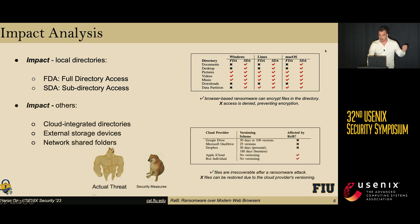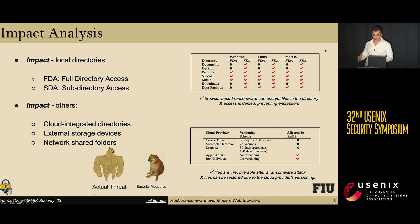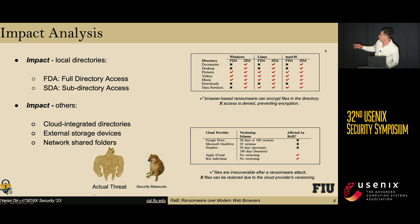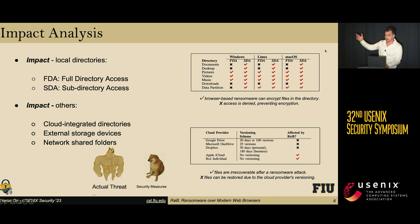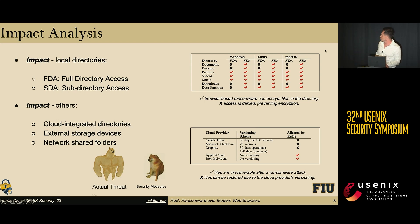In addition, ROP can also encrypt directories synced to cloud providers. Cloud providers such as Google Drive and Microsoft OneDrive implement a versioning scheme to prevent possible ransomware attacks. Other cloud providers such as Apple's iCloud do not implement that type of versioning scheme, which makes them vulnerable to browser-based ransomware attacks.